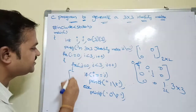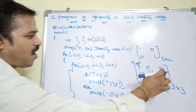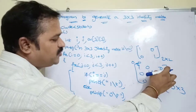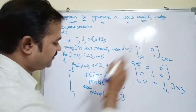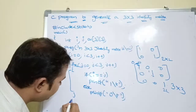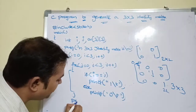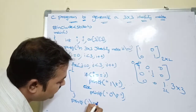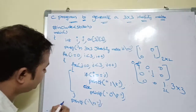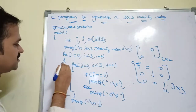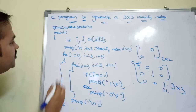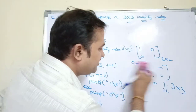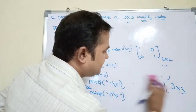Whenever the inner j-loop finishes — after displaying a full row — we print a newline using printf("\n") so that the next row starts on a new line. Then we close the outer for loop and the main function. Now let's check whether our program is correct.